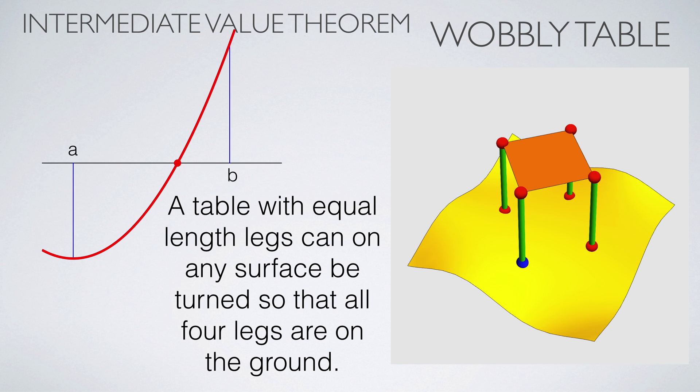The intermediate value theorem tells that a continuous function which is negative at some point A and positive at some other point B must have a zero between A and B. Not so obvious is the application of the wobbly table. On any surface, as uneven as it might be, one can always turn the table so that all four legs are on the ground.